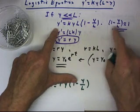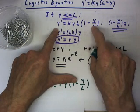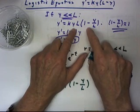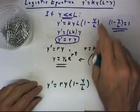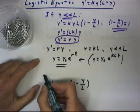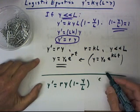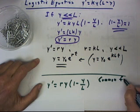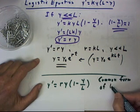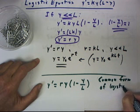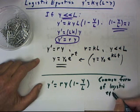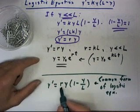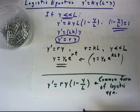Everything that follows from this step down does depend on y much less than L. But this equation holds, and this equation is just a simple rearrangement of this equation so that the common form, a common form of the logistic equation is what you see here: y' = ry(1 - y/L).